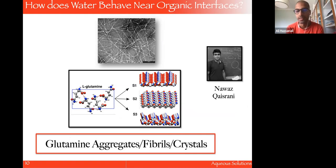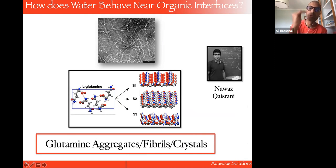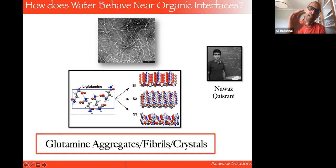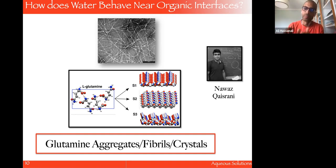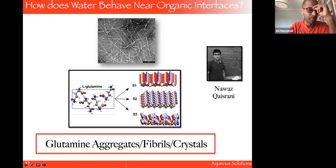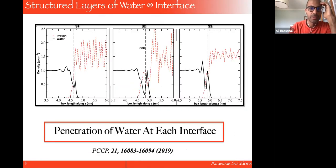The first system — work with former PhD student Noaz Kesarani — we were interested in understanding how water changes near glutamine amino acid surfaces. These are three crystallographic surfaces — the (100), (010), and (001) surfaces of glutamine. These are nice model systems because they're crystals, so one can isolate, without dealing with fluctuations of the protein itself, how the water dynamics changes. On the more practical side, these aggregates have been noted as playing a role in triggering neurodegenerative diseases. We did classical molecular dynamics simulations.